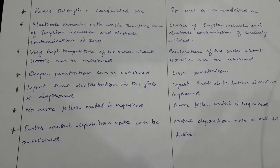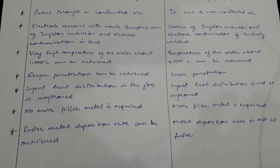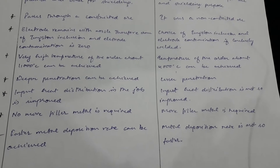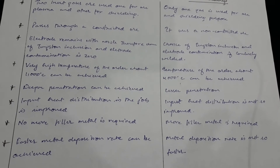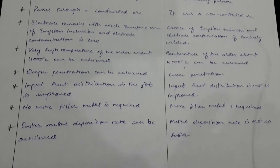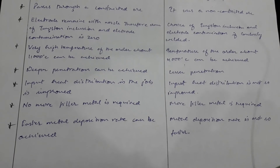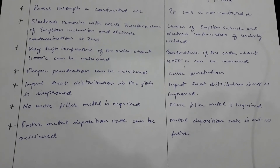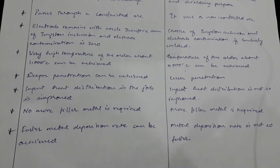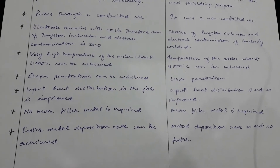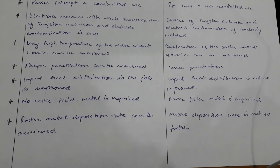The input heat distributed in the job is improved in plasma arc welding, whereas in TIG welding the heat distribution is not so improved. No filler material is required in plasma arc welding, whereas in TIG welding there is a need for filler material.